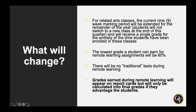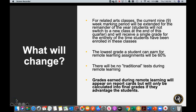What will change? For related arts classes, the current nine-week marking period will be extended for the remainder of the year, so students will not switch to a new related arts class and will receive a single grade for the entirety of their time in that class. The lowest grade a student can earn for a remote learning assignment will be 60%. There will be no traditional tests during remote learning — teachers will not be posting timed fill-in-the-blank or multiple-choice exams. Grades earned during remote learning will appear on report cards but will only be calculated into the final grade if they advantage our students.